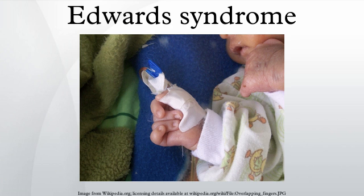Very rarely, a piece of chromosome 18 becomes attached to another chromosome before or after conception. Affected individuals have two copies of chromosome 18 plus extra material from chromosome 18 attached to another chromosome. With a translocation, a person has a partial trisomy for chromosome 18, and the abnormalities are often less severe than for the typical Edwards syndrome.